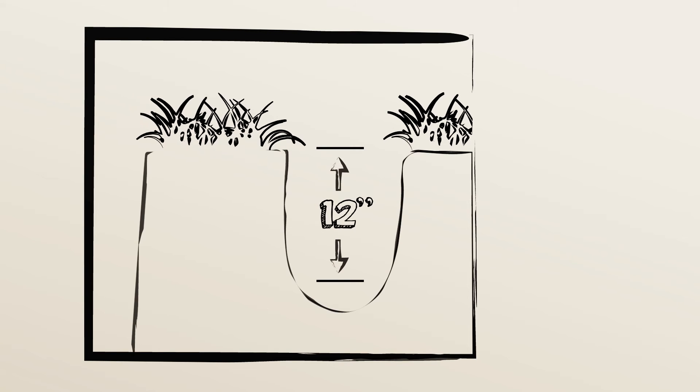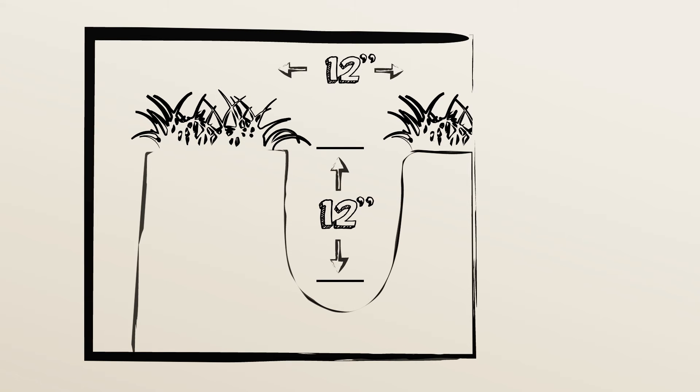Soil drainage is important to understand and manage. Clay soils drain poorly, and sandy soils drain rapidly. To determine your soil drainage, dig a hole about twelve inches deep and eight to twelve inches wide. Fill the hole with water, allow it to drain, and refill it twelve hours later.